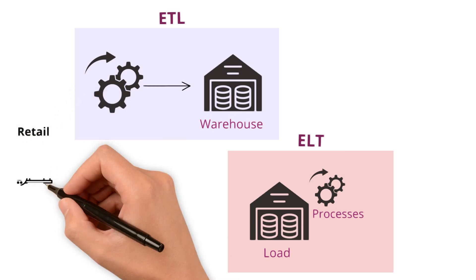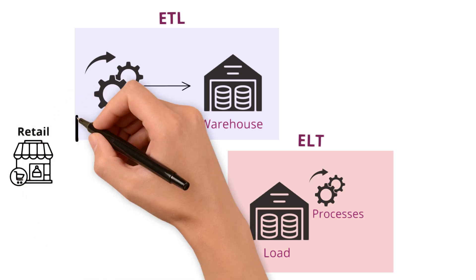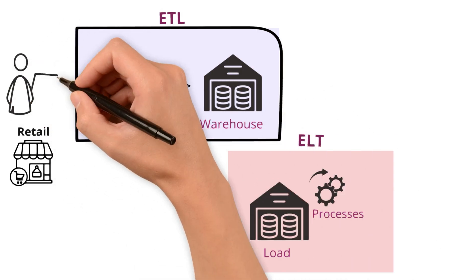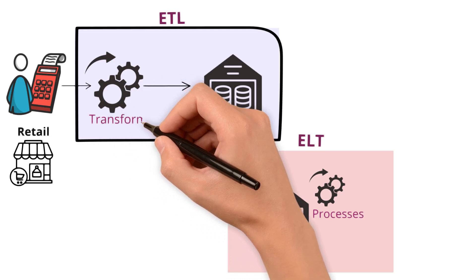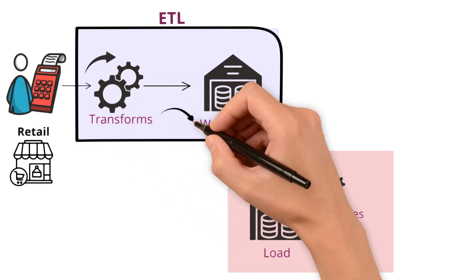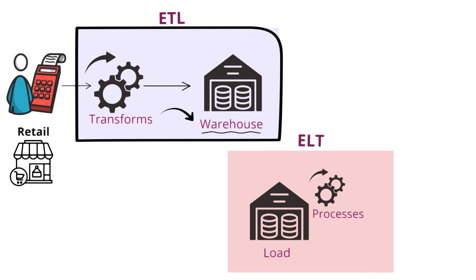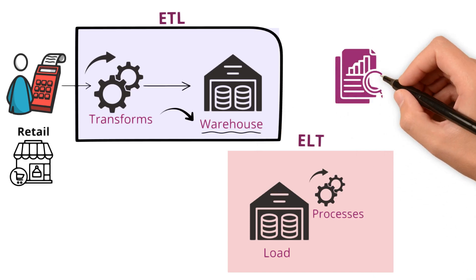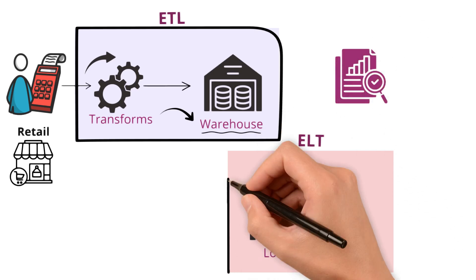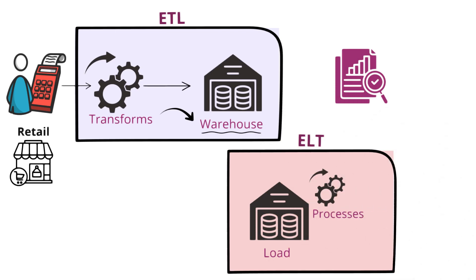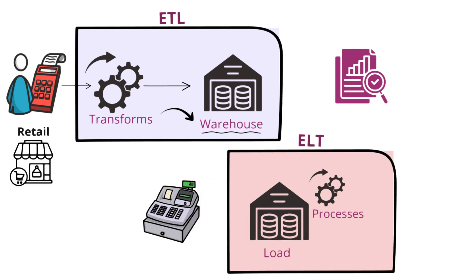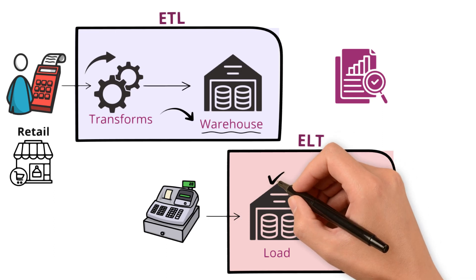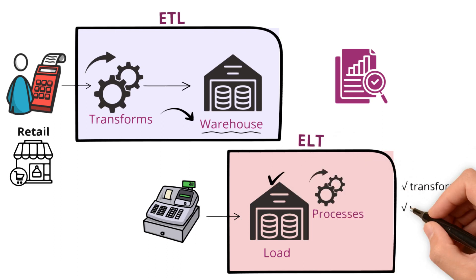Take the retail industry for example. Using the ETL method, data from point-of-sale systems is first refined — transformed to meet specific standards — and then loaded into a central data warehouse, ready for in-depth analysis and reporting. On the other hand, ELT streamlines this process. Sales and inventory data flow directly from the checkout to the data warehouse without preliminary alterations. It's in the warehouse that this data is transformed, standardized, and fine-tuned.